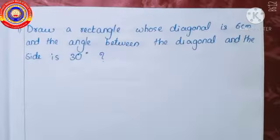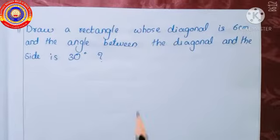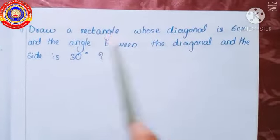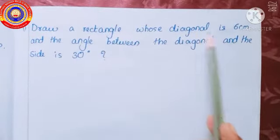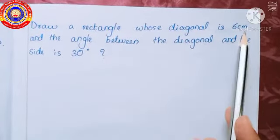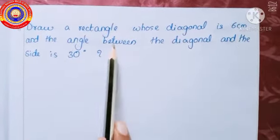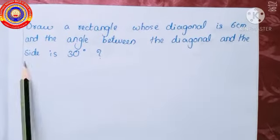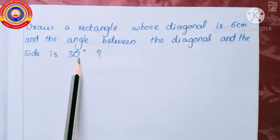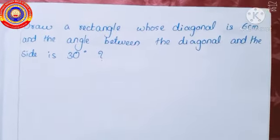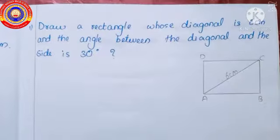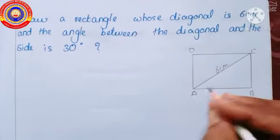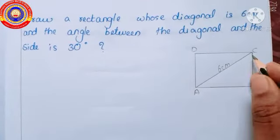Join the points and we will get the required rectangle. Now, can we draw rectangles of specified diagonals? For example, draw a rectangle whose diagonal is 6 centimeters and the angle between the diagonal and the side is 30 degrees. First of all, draw a rough figure for reference.